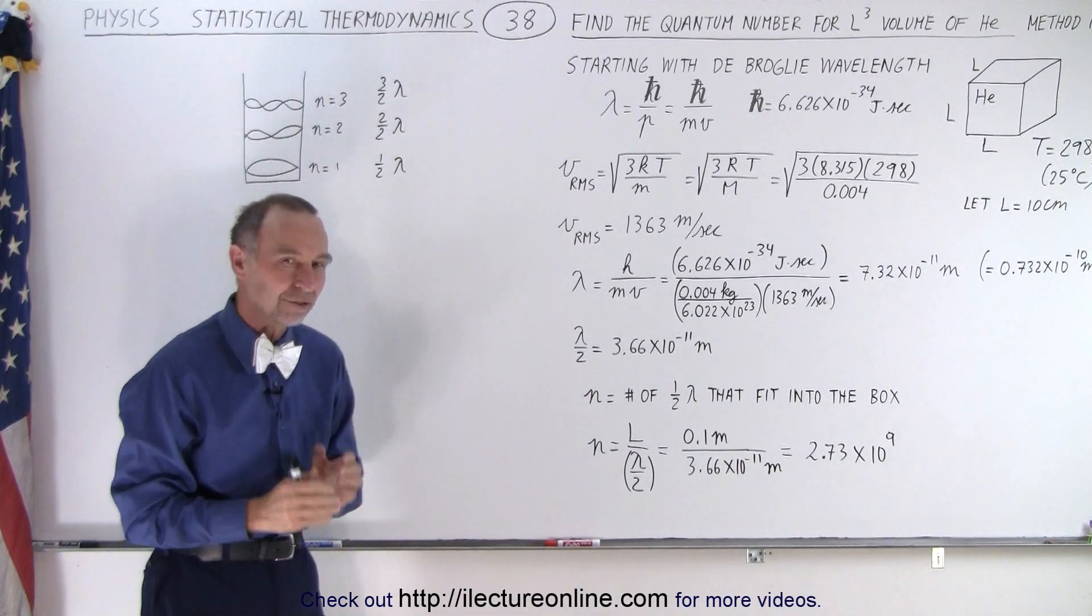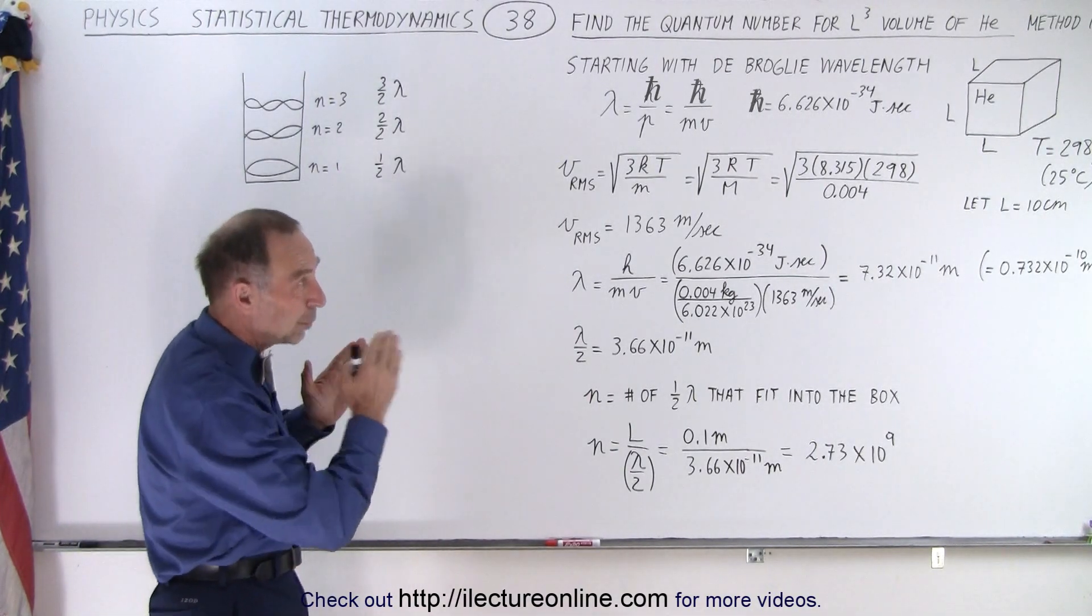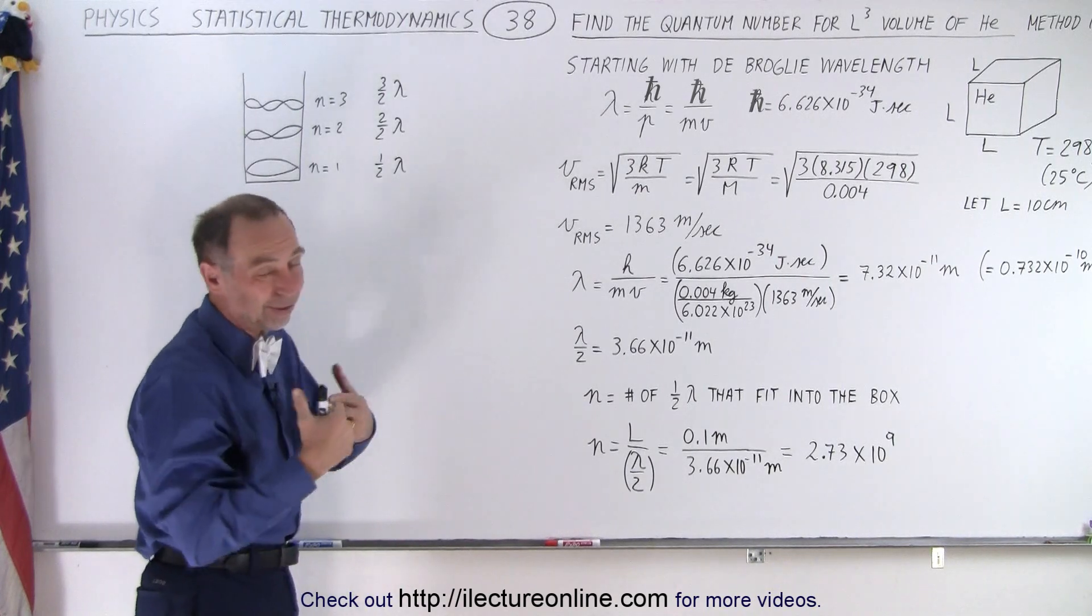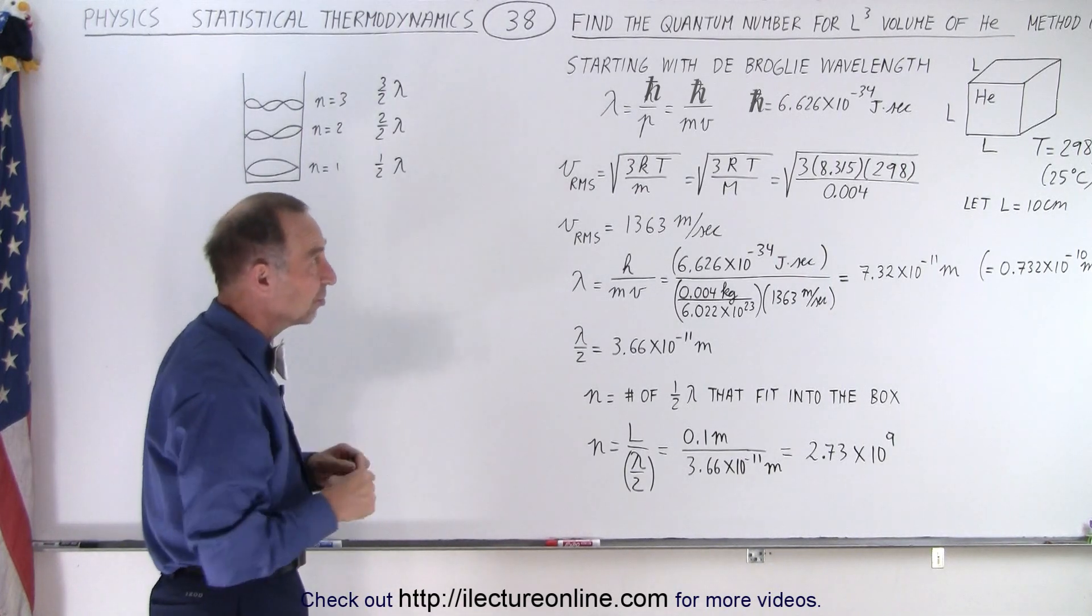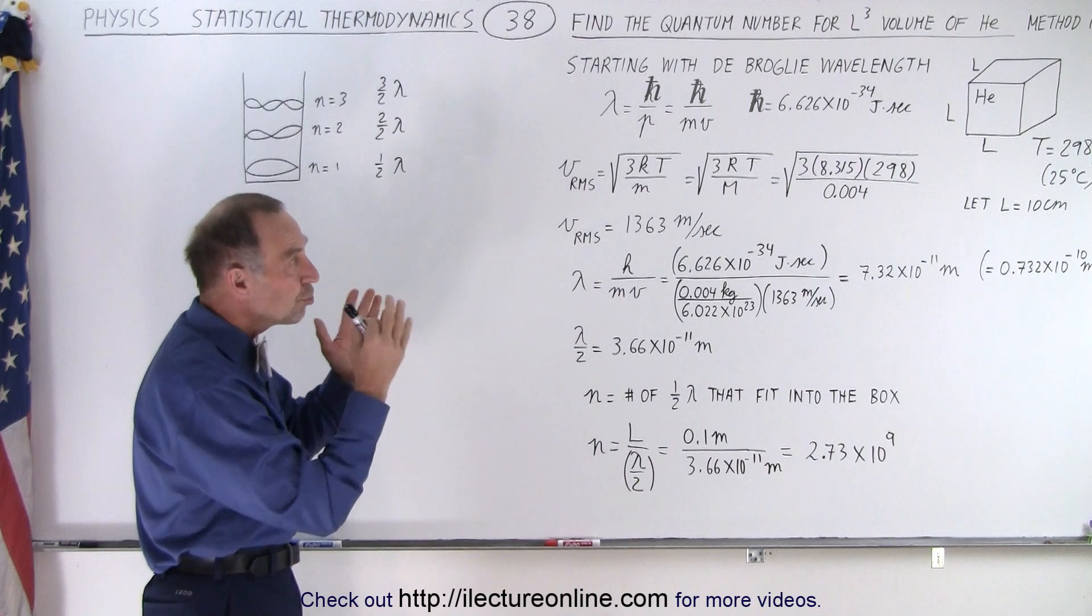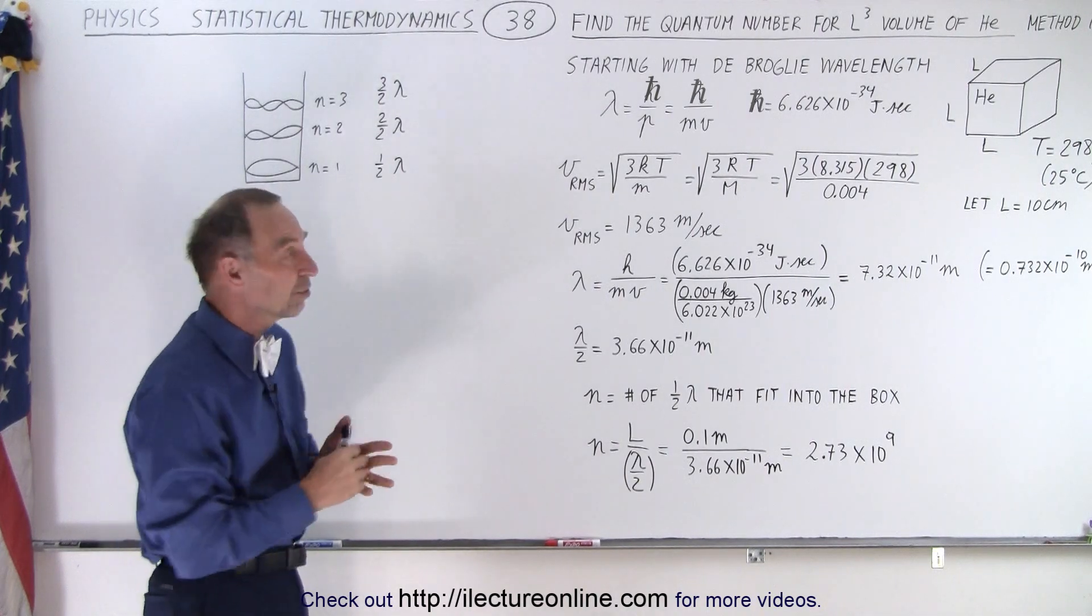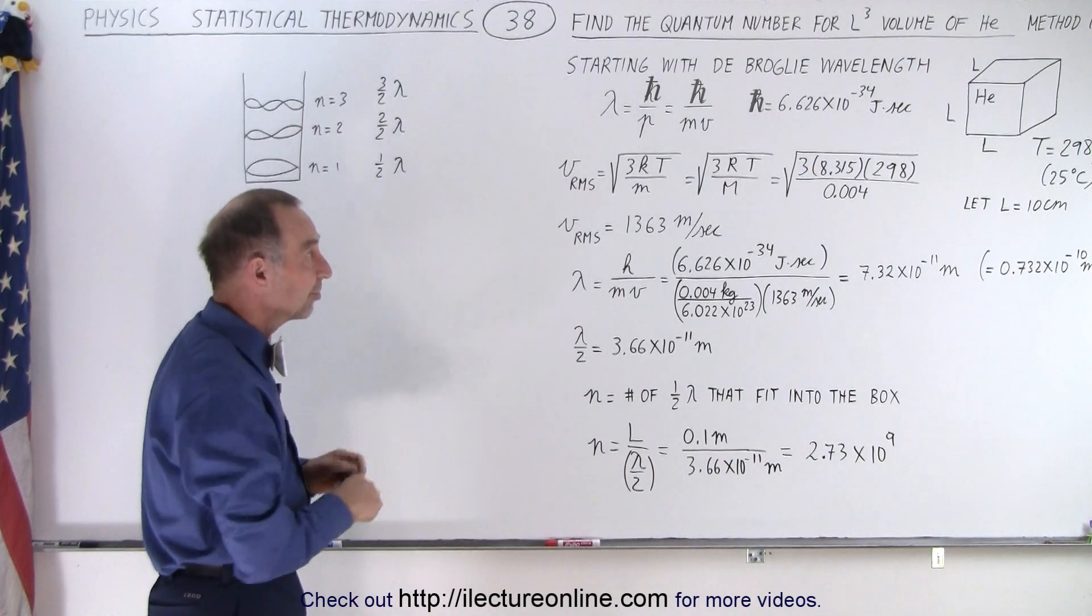So we're going to use the same concept for the box. In one dimension of the box, since we made it easy by making all dimensions equal in size, what are the number of half wavelengths for a particle moving from one side to the other side?